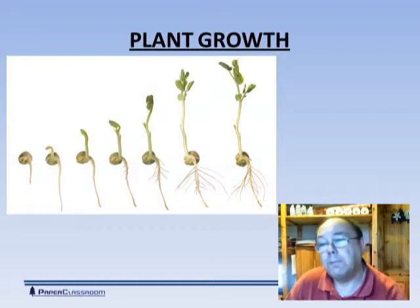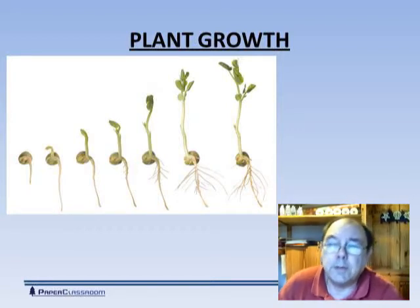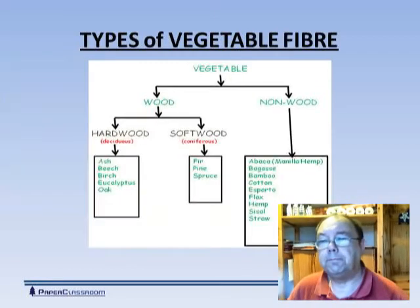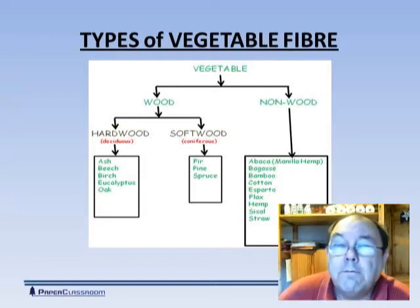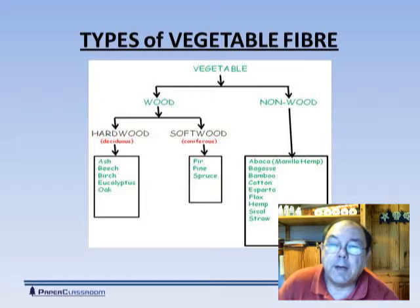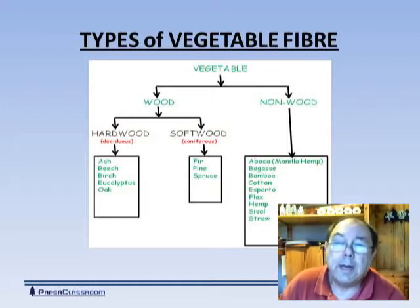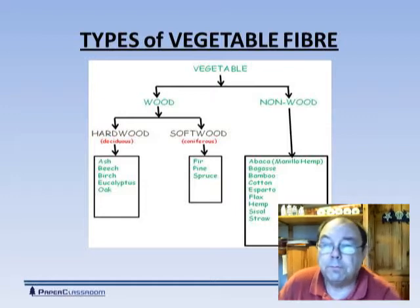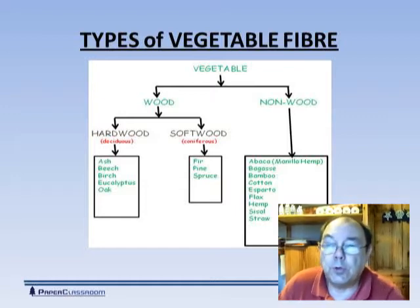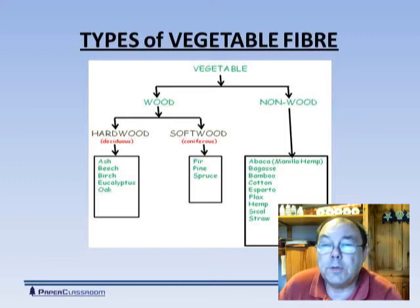Where do fibres come from? You can see the natural growth of a plant, but life isn't so simple — let's look at that in a little more detail. Vegetable fibres are anything that grows, and we can categorise them as either wood or non-wood. Non-wood fibres are really the annual crops: abaca, which is a version of hemp; bagasse, which comes from sugarcane; and bamboo, a fibre of growing use these days.